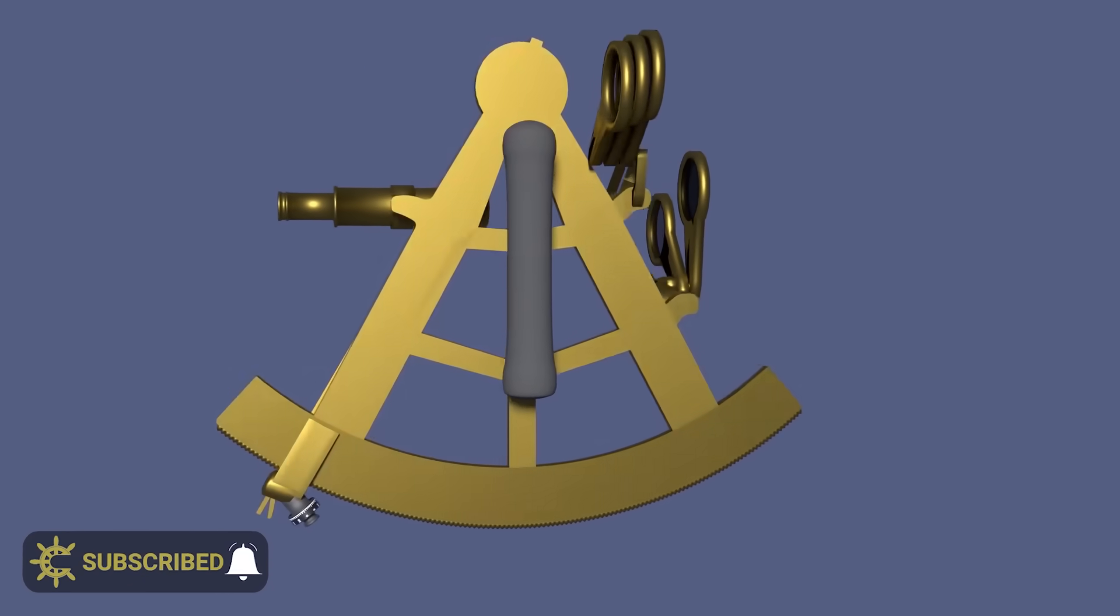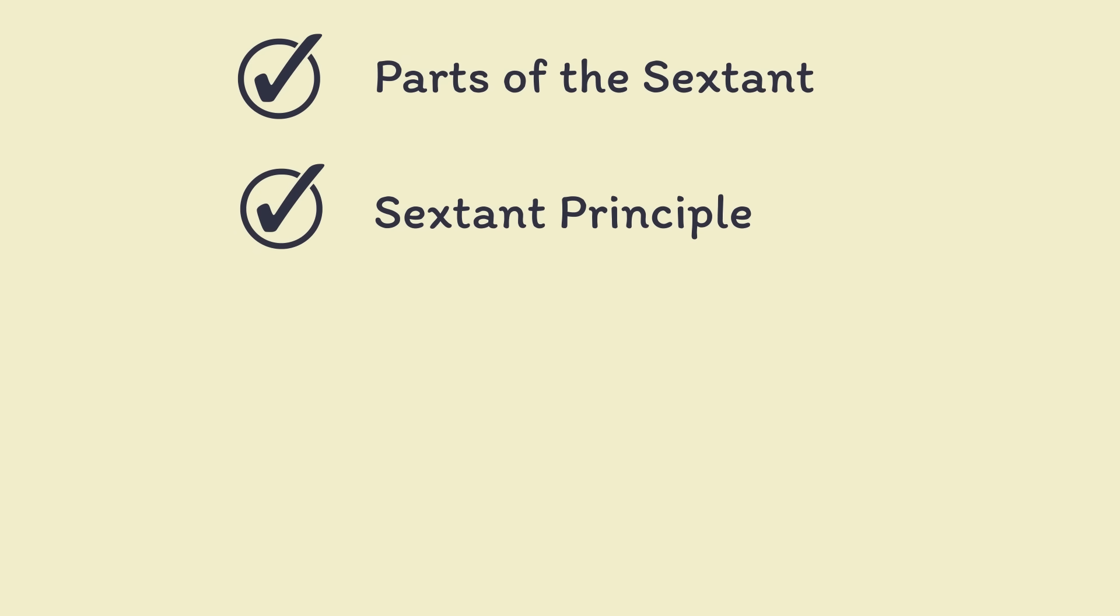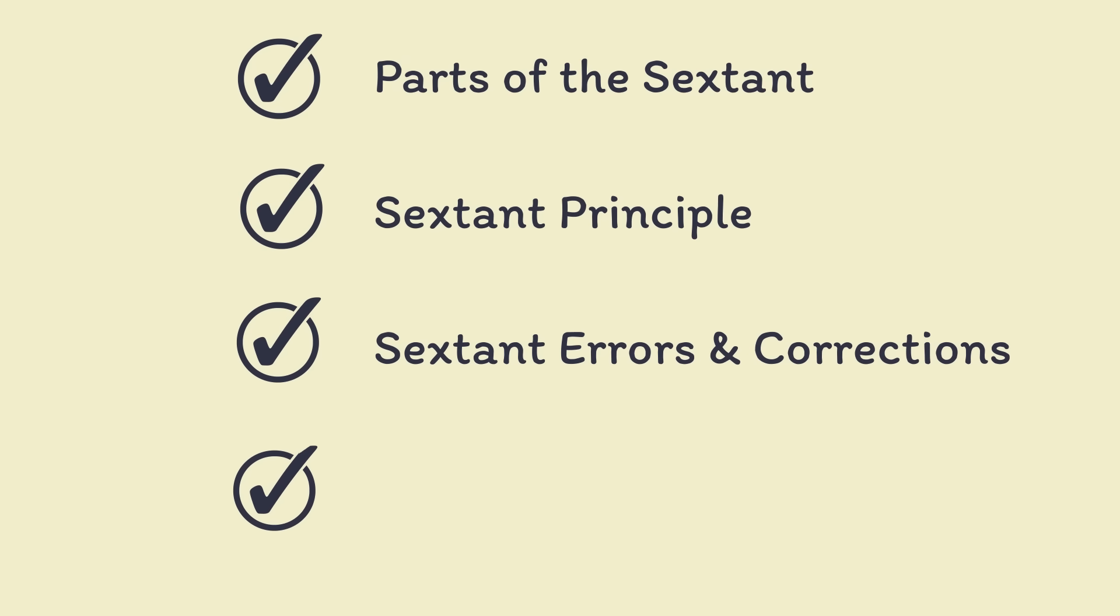We're going to have to break it down into three tutorials. This video, we're going to look at parts of a sextant, the operational principles, and just generally how it works. Next time, we're going to look into sources of error and methods for correcting them, and then the final video we're going to cover actually taking a sight with it. I would advise watching all the way through, as understanding the principles will really help when you're using it in anger.